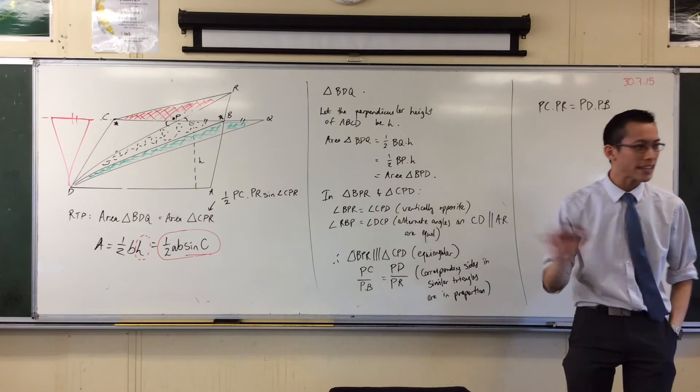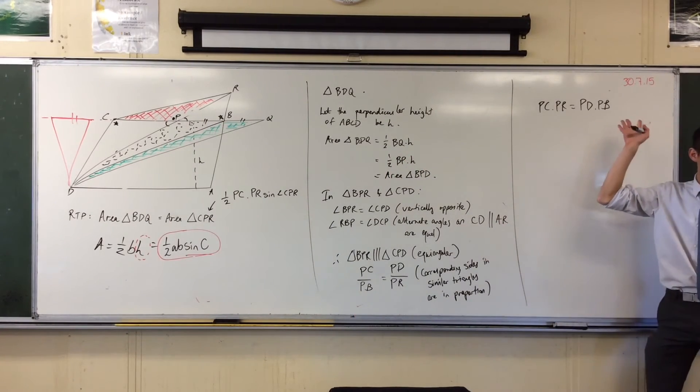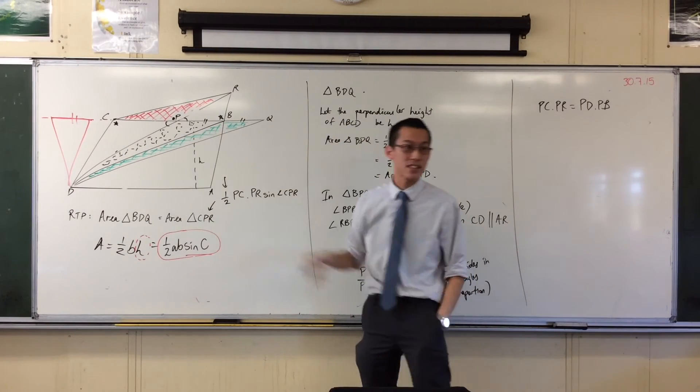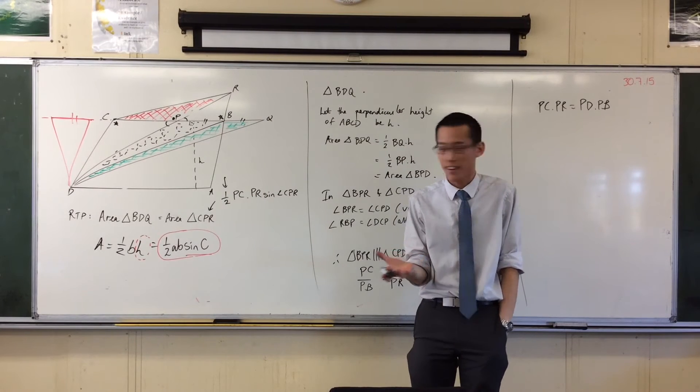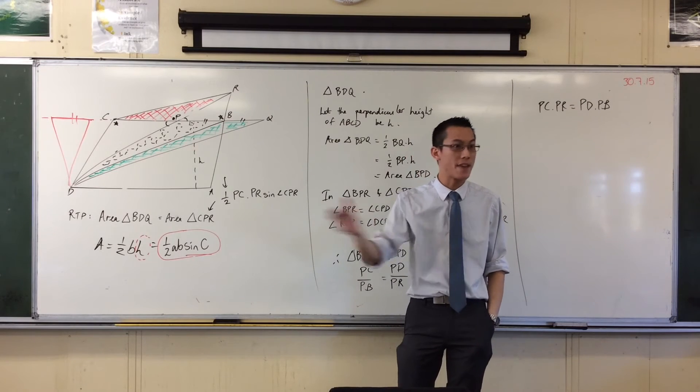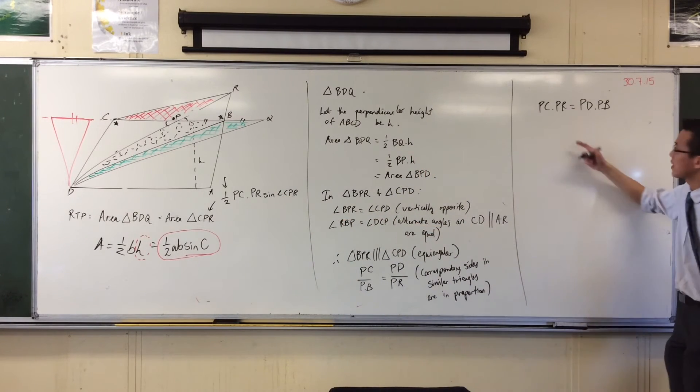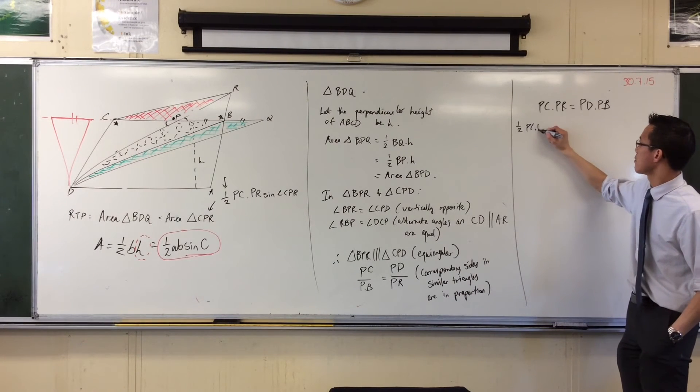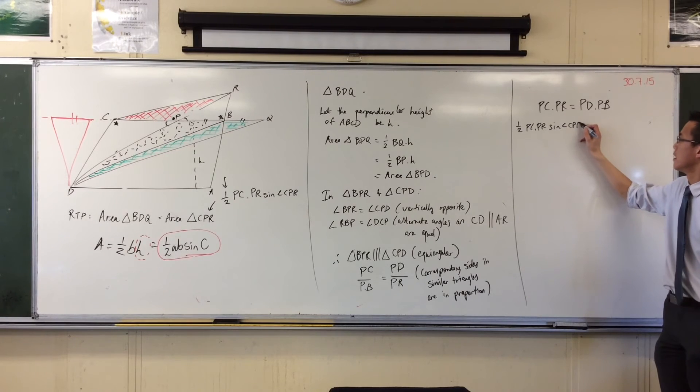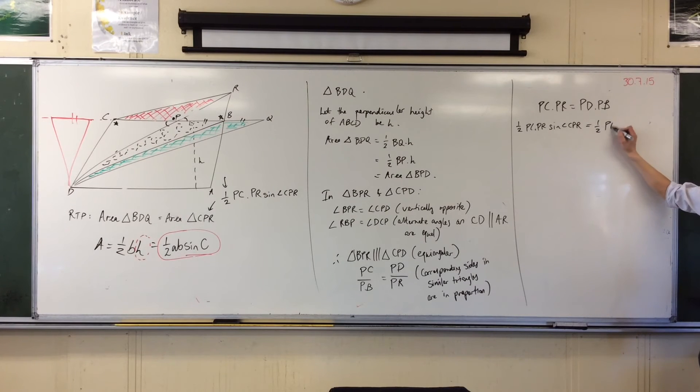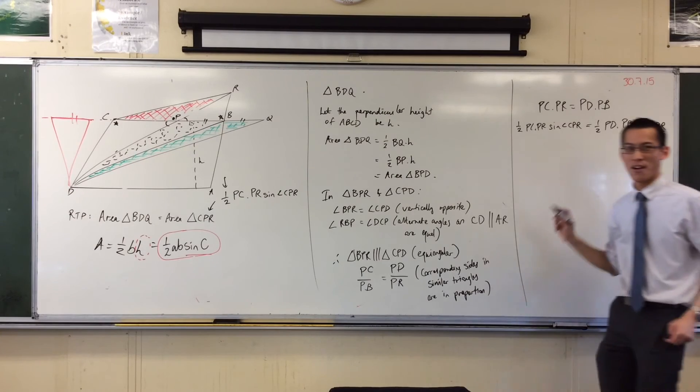But I want to get from here, which is just about sides, I want to get to something like this. Now, don't freak out. It's okay. A half, that's a constant, right? You agree with that? Sine of this angle, right? That's also just a number, whatever, depending on what CPR is, okay? So therefore I can just multiply both sides by, let's go, a half PC PR sine this. If you multiply one side by that number, you better multiply the other side by that number. Sine CPR. Okay, what's left?